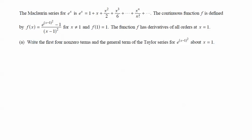In this problem we're given the Maclaurin series for e to the x, and we're told that the continuous function f is defined by f of x is given there for x not equal to 1, and that f of 1 is equal to 1. The function f has derivatives of all orders at x equals 1, and our first task is to write the first four non-zero terms and the general term of the Taylor series for e to the quantity x minus 1 squared about x equals 1.